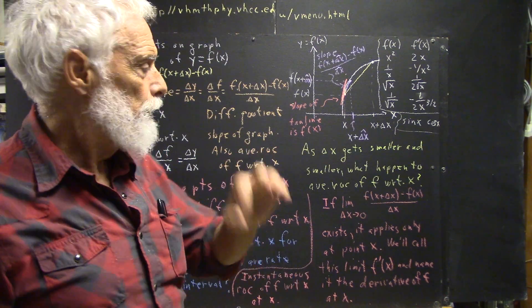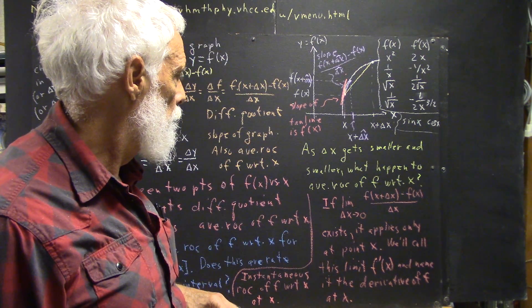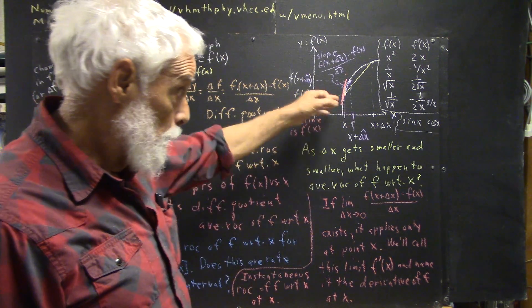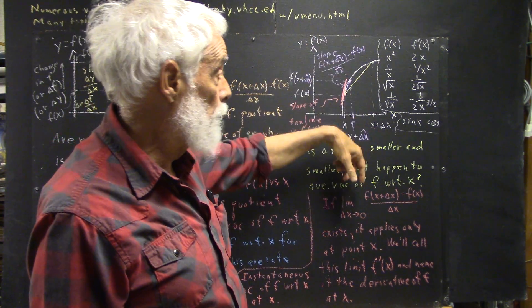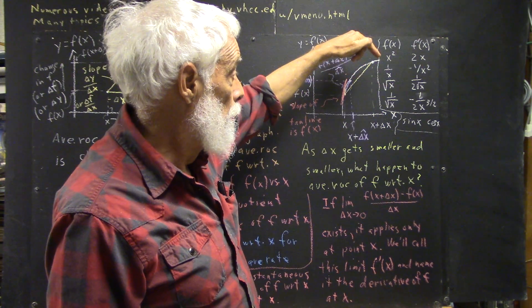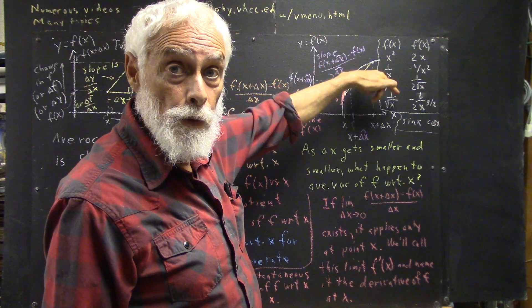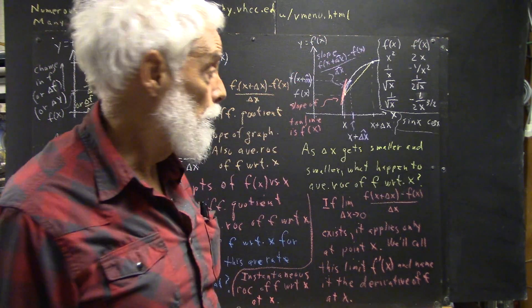But to get a tangent line, or the equation of a tangent line at a given point, say I wanted the equation of a tangent line to the graph of the square root of x when x equals 4.